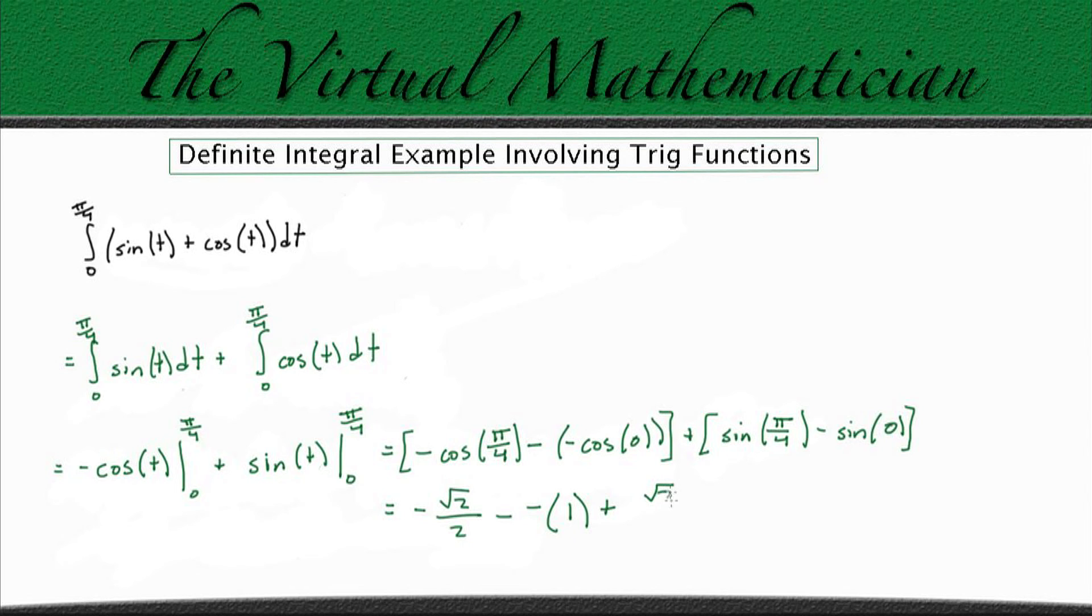plus sine of pi over 4, which is just root 2 over 2 again, minus sine of 0, which if you recall is just 0.